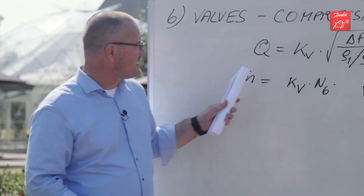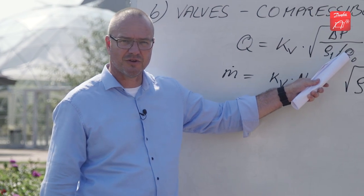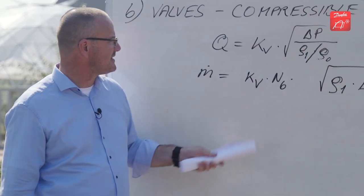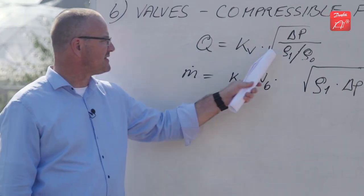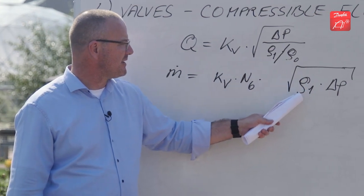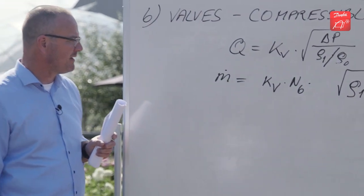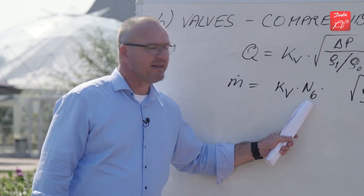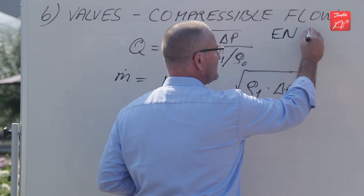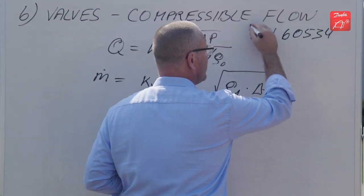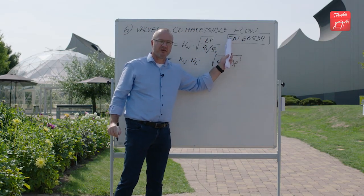What we did was take the reference density of 1000 kilograms per cubic meter and put it into a constant called N6, then multiply by rho one on both sides of the equation — so it comes up on top and multiplies by delta p under the square root sign. We call it N6 because we follow the IEC 60534 standard when doing calculations on valves.